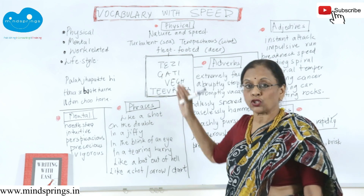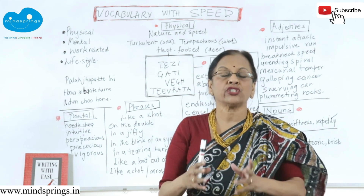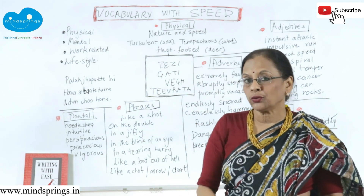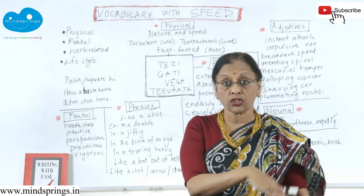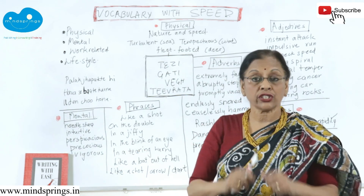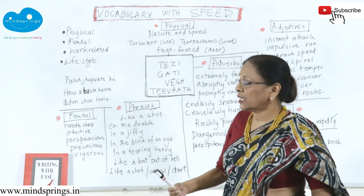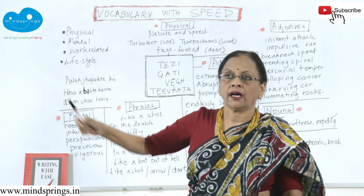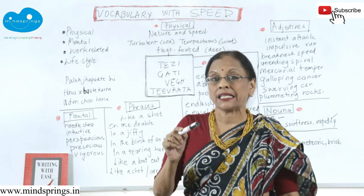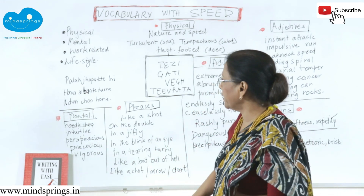These are the various aspects of speed. The problem is that in English, usage is very important. You cannot just take one word and throw it into any context — you can't say this is speed, that is speed, and use any word anywhere. Usage is important. There are four things: physical, mental, work-related, or lifestyle-related. In each one you will get speed-related words, and each of these is different — sometimes you can exchange them, sometimes you cannot.